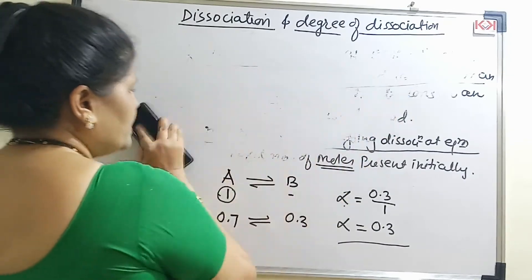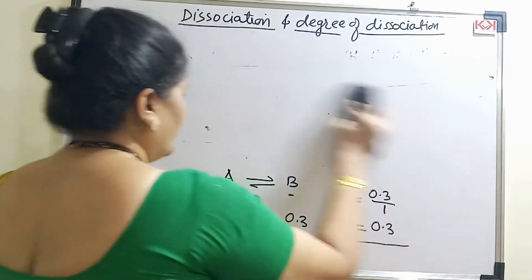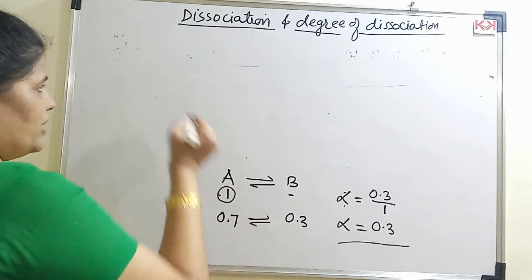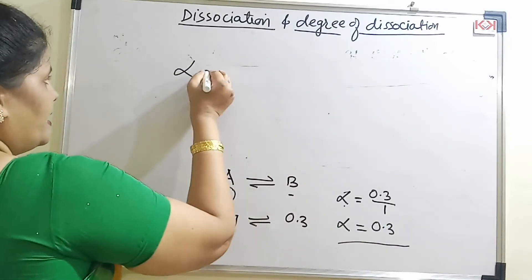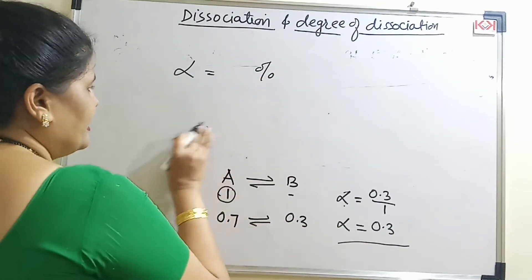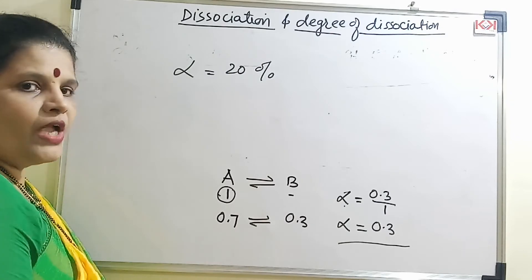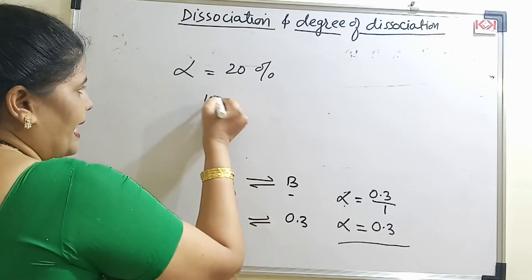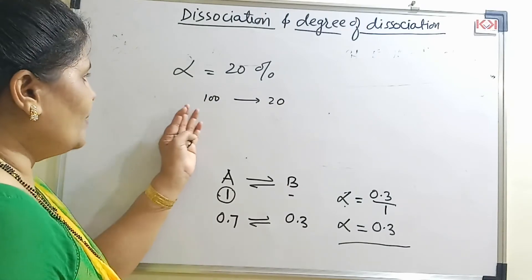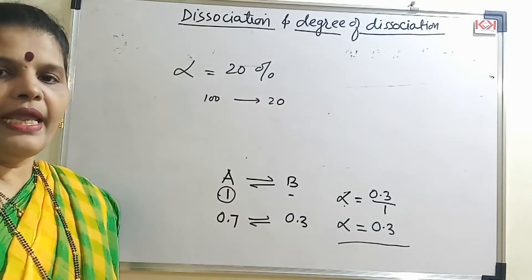Degree of dissociation is usually expressed in percent. For calculations it is given in percent — for example, if degree of dissociation is 20%, it means if 100 moles are added, only 20 of those dissociate, so it is expressed as 20 upon 100.